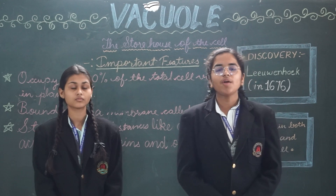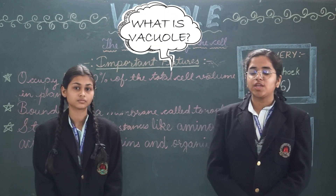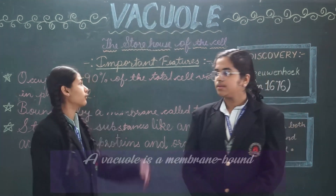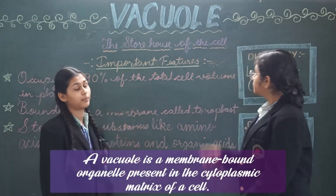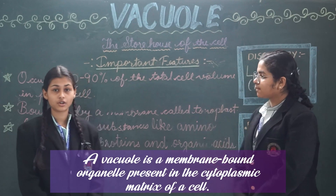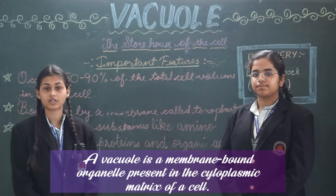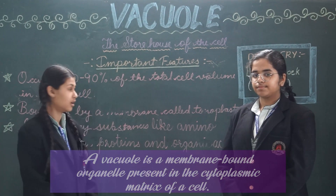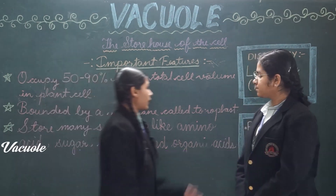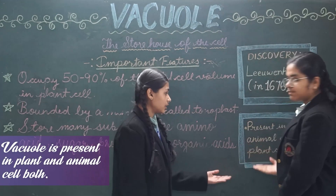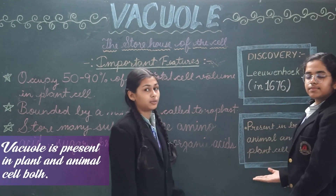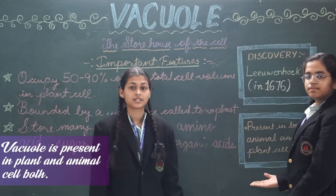Now you must be thinking what is a vacuole. A vacuole is a membrane bound structure found in the cytoplasmic matrix of a cell. Vacuoles are present both in animal and plant cells.